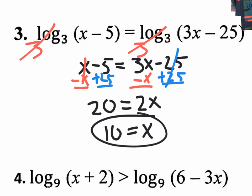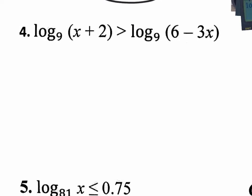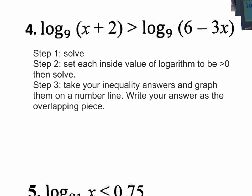Number 4 is different than the previous three because this is an inequality, and on inequalities you have multiple steps. Step 1: solve like always — get rid of the logs and solve for x. Step 2: set each inside value of the logarithm to be greater than 0. So take x plus 2 and make a side inequality that says x plus 2 is greater than 0, and also set 6 minus 3x to be greater than 0. It's really like solving three different problems to get three different inequalities. Step 3, the final step, is to take your inequality answers, graph them on a number line, and represent the overlapping pieces.